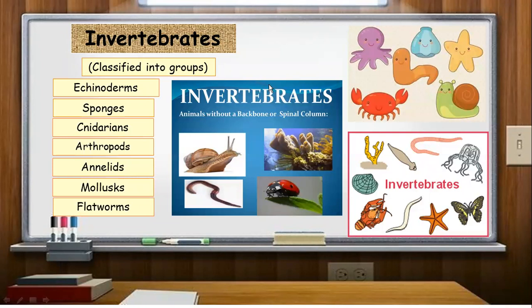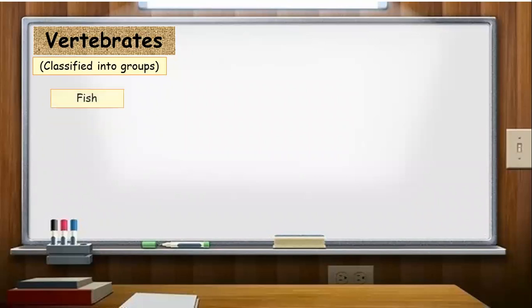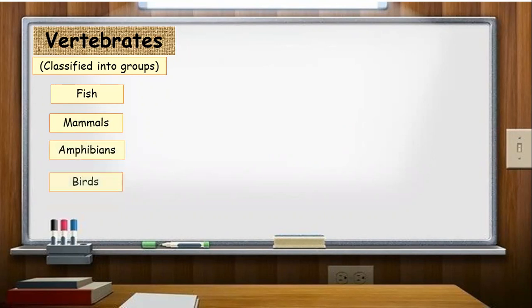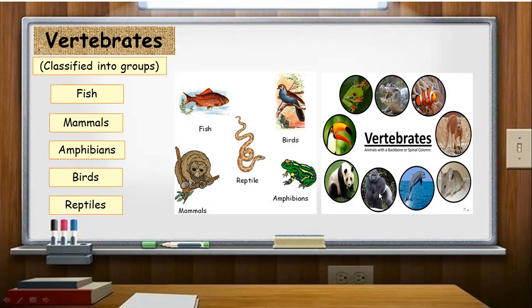But we did not focus mostly on invertebrates because we focused mainly our discussion the whole week on vertebrates. We discussed the different groups of vertebrates, and we finished that one since yesterday. It's about reptiles. So we are finished with mammals, birds, fish, amphibians, and reptiles. Let's discuss what are the five groups of vertebrates. Vertebrates are classified into groups. The first is fish, mammals, amphibians, birds, and the last one is reptiles that we discussed yesterday. As you can see in the picture, these are the examples of groups of vertebrates.